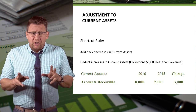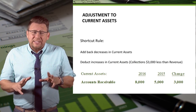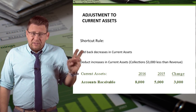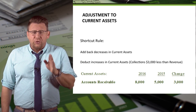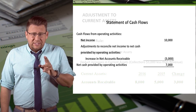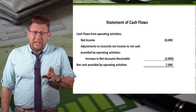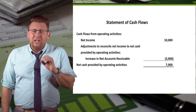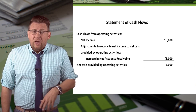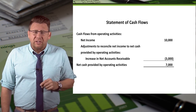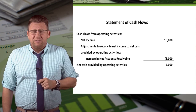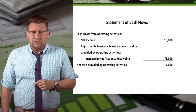So back to our shortcut rule: we deduct increases in current assets because in this example, cash collections are $3,000 less than sales revenue. Since sales revenue was used to arrive at net income, we need to deduct $3,000 from net income. Assuming net income was $10,000, cash provided by operating activities is $7,000.